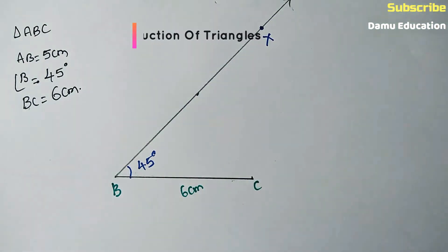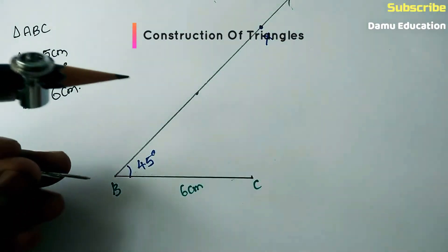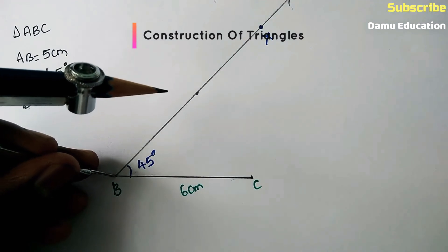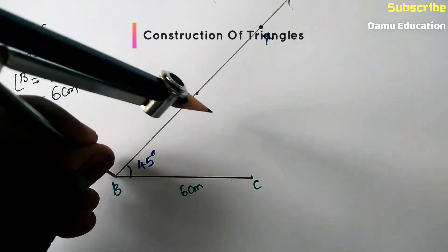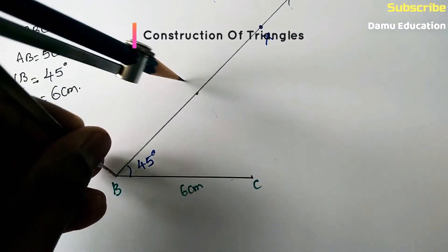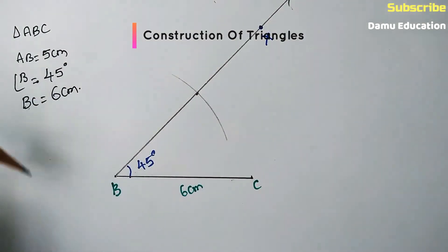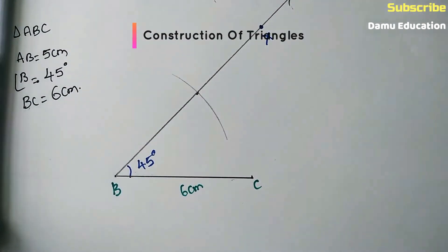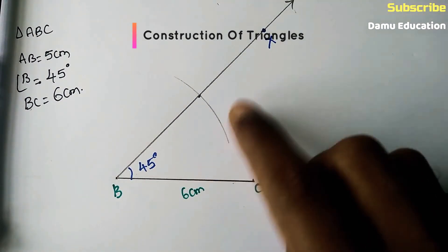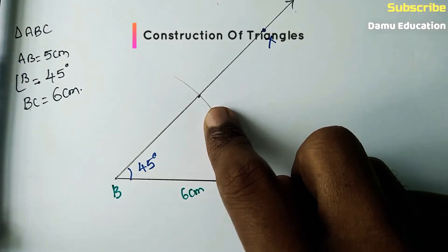Draw one arc with B as center and radius 5 centimeters on ray BX. Make sure the arc coincides with ray BX. Mark the point where the arc coincides with the ray.